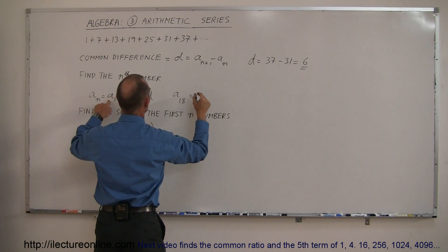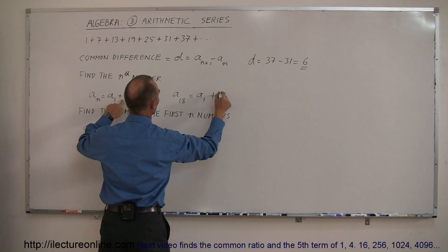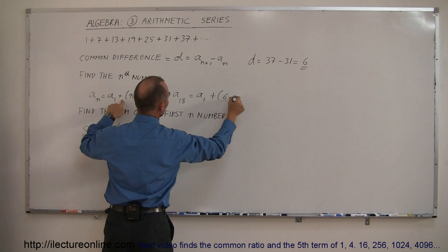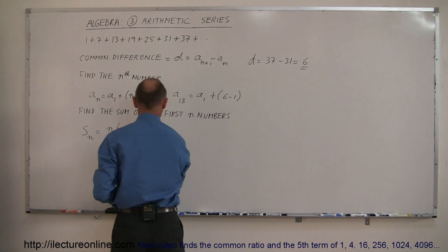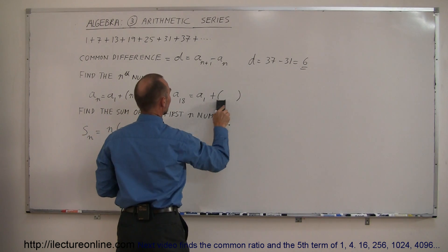This is equal to the first one, a sub 1, plus the difference 6 minus 1 times... I don't have this correctly, I'm jumping the gun here.